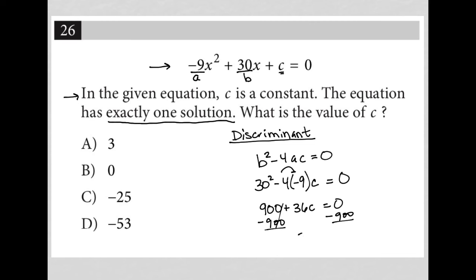And I'm left with 36c is equal to negative 900. And then from there, I can figure out what negative 900 divided by 36 is. And that would give me negative 25. So our correct answer here is choice C.